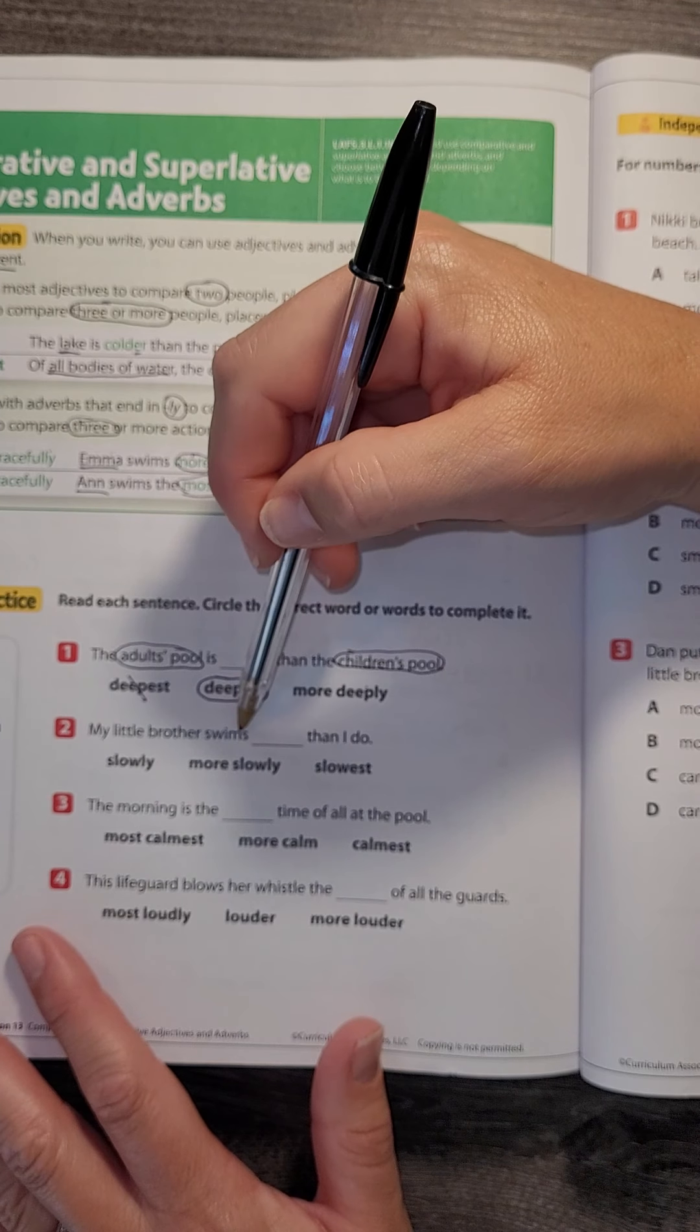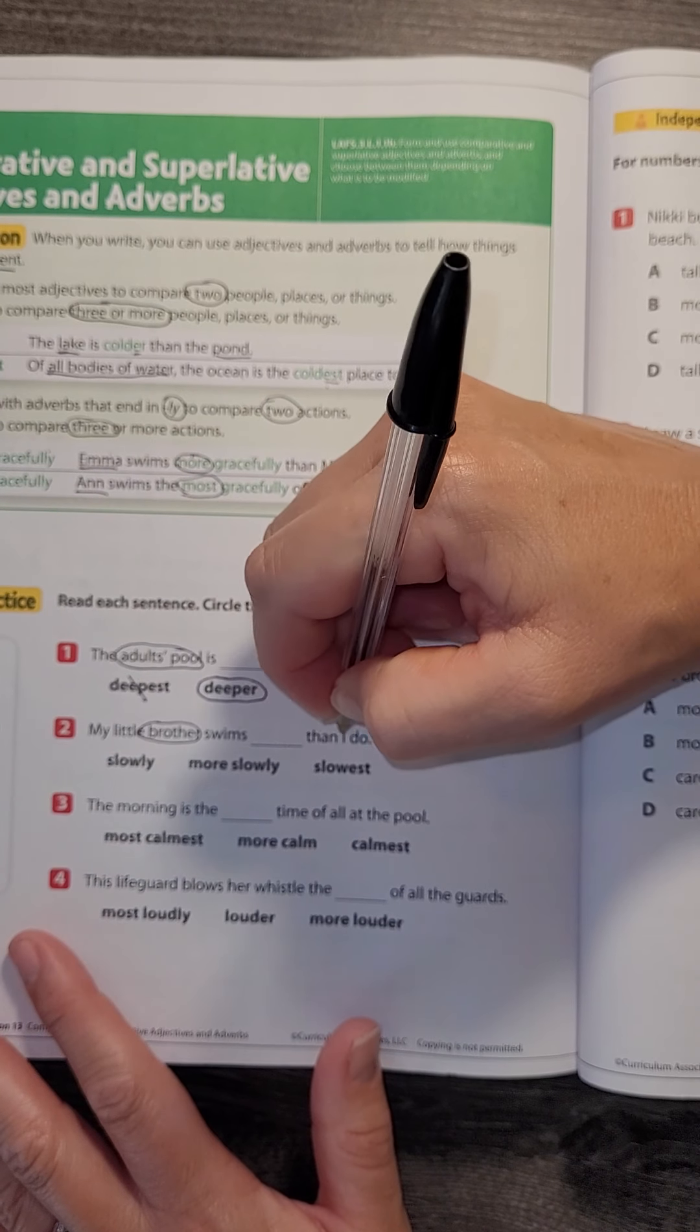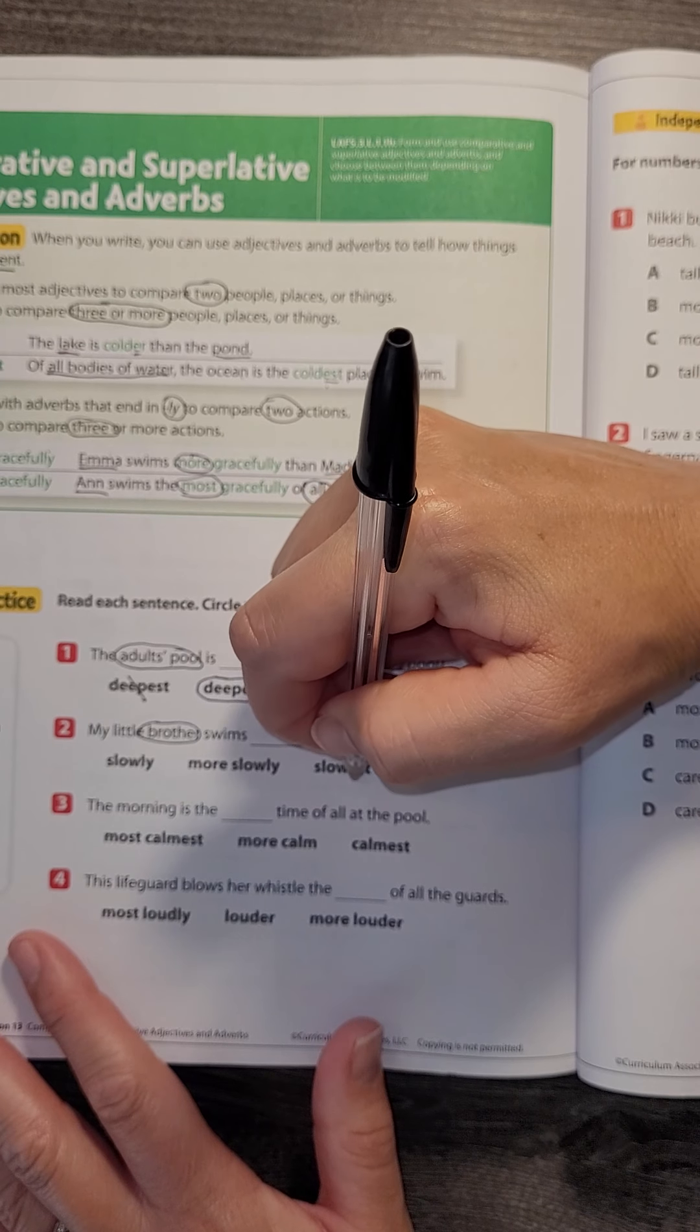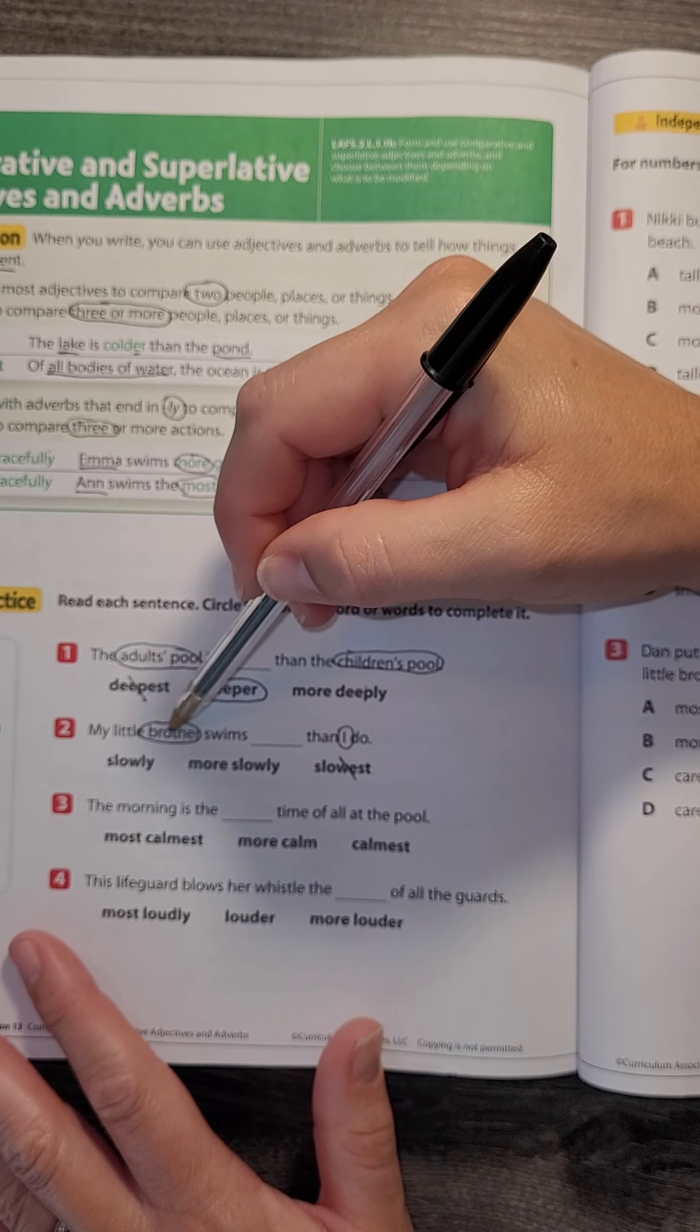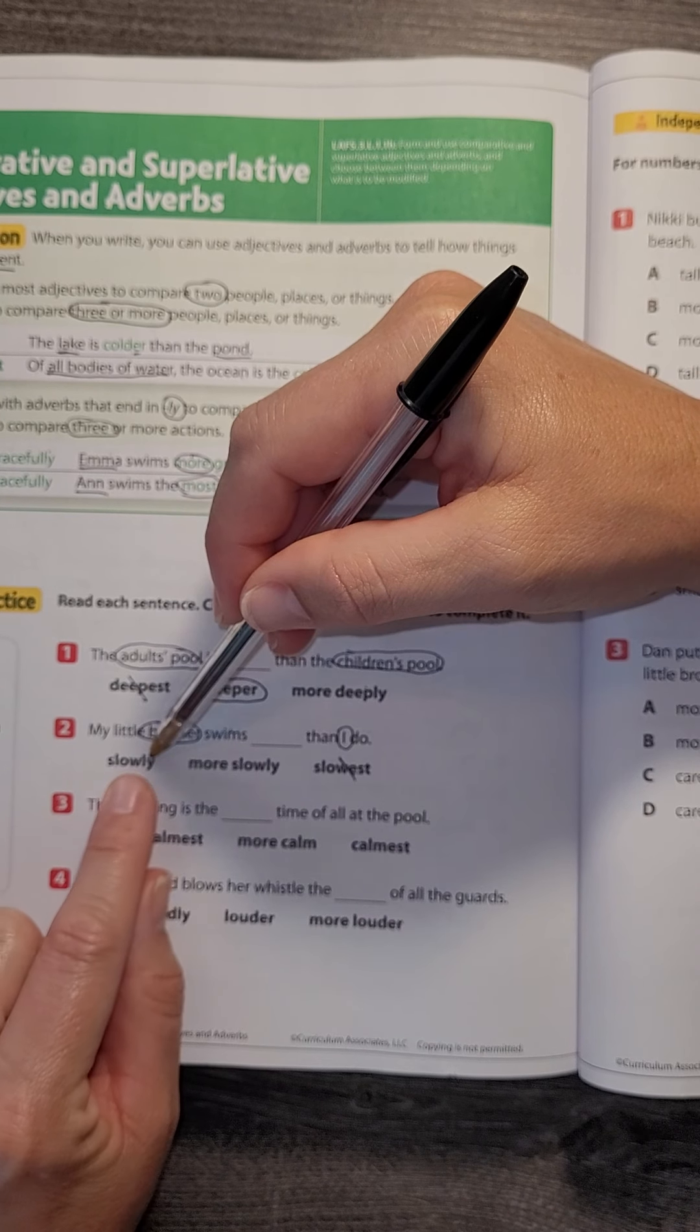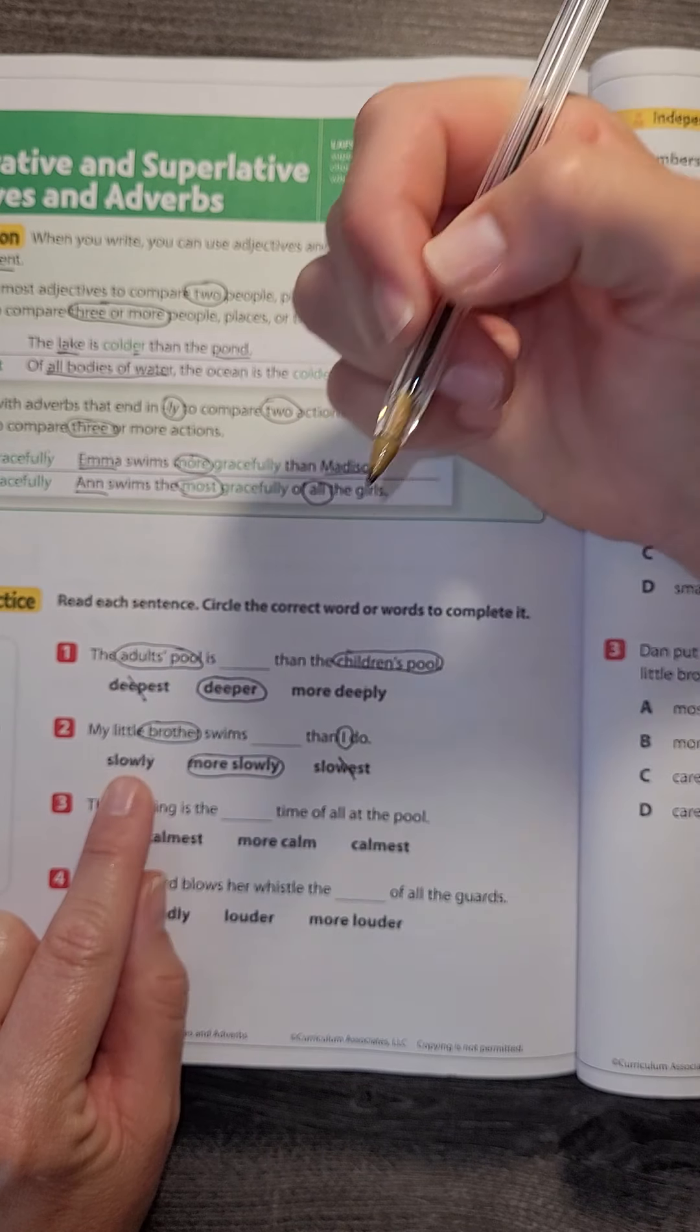My little brother swims blank than I do. So I'm comparing the brother to me, which is two people, so we know it's not 'slowest.' My little brother swims—'slowly' is the verb. But if I'm comparing, I would say 'more slowly.'